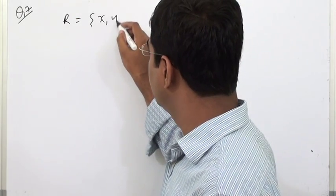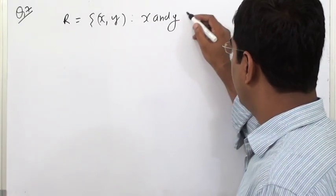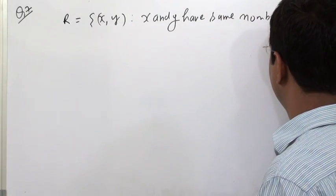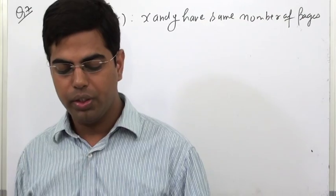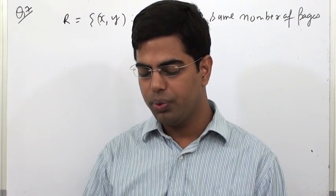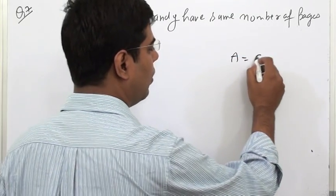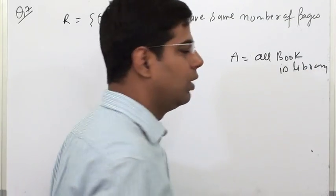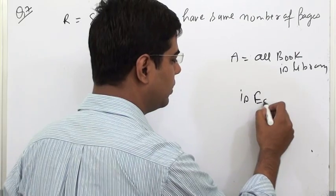R is equal to X related to Y such that X and Y have the same number of pages. It is an equivalence relation. Show that relation R is a set A of all books in a library of college — the set A of all books in a library. We are showing that this relation is equivalence.